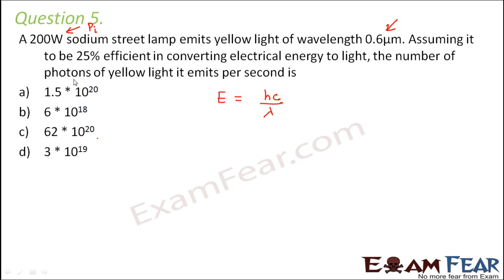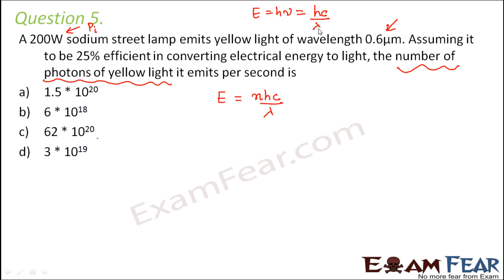The question asks us to find the number of photons of yellow light, so we are considering the particle nature of light, where light is made up of many photons. The energy is basically N times H times c divided by lambda, where N represents the number of photons, because Hc by lambda is the energy of one photon. So the energy of N photons is NHc by lambda, and therefore the power of the emitted light equals energy per unit time, which is NHc divided by lambda-t.